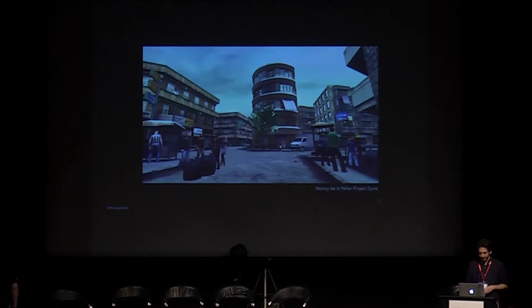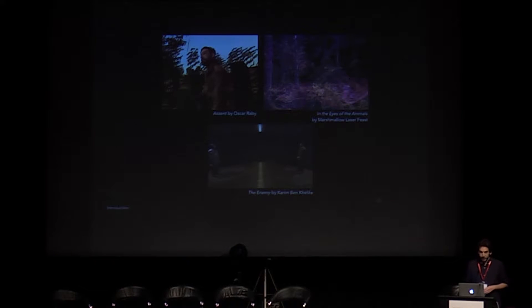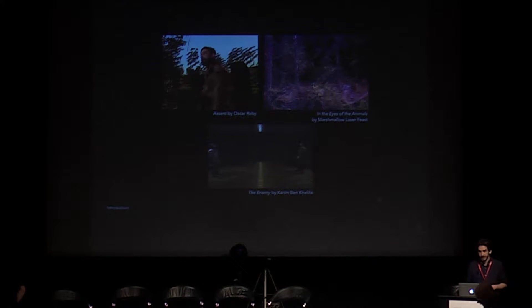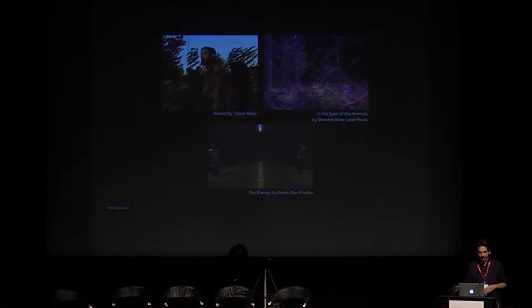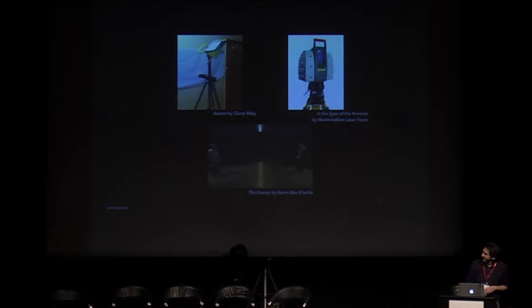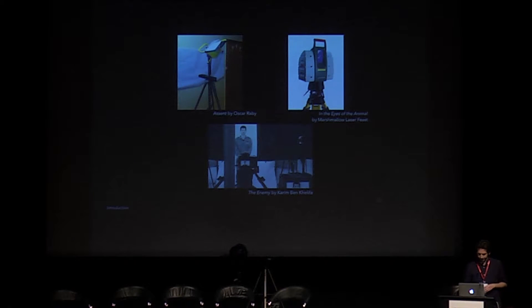How can we create a space that the user can navigate in and interact with objects? One way is modeling the environment, such as Nani de la Pena's Project Syria. Another way is to record places through 3D capture, and VR works such as Ascent, In the Eyes of the Animal, and The Enemy use this method. These works record environments and objects through technologies like Kinect, laser scanning, and photogrammetry. In these works the images, at least partially, are created through 3D capture.